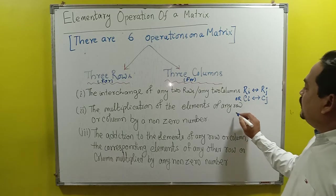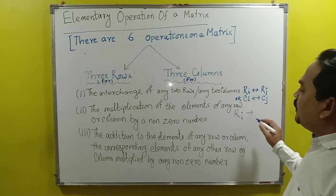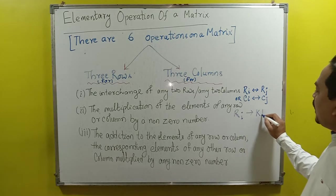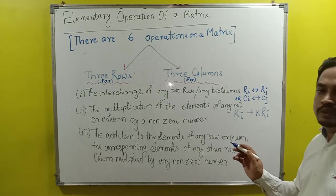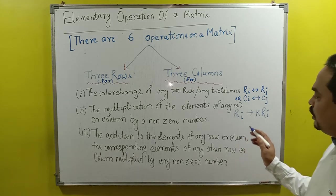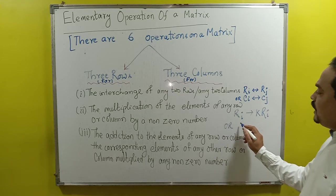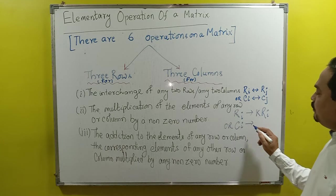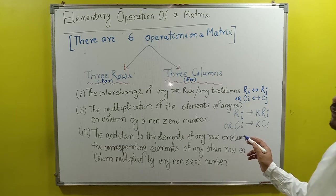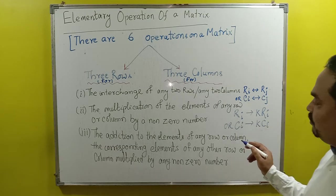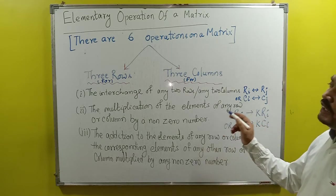This operation says: R_i is replaced by K·R_i, where K is a non-zero number — it should not be 0, it can be negative or positive, any real number. This operation is also applicable to columns: C_i is replaced by K·C_i. The i-th row is replaced by K·R_i and the i-th column by K·C_i. This is your second operation.